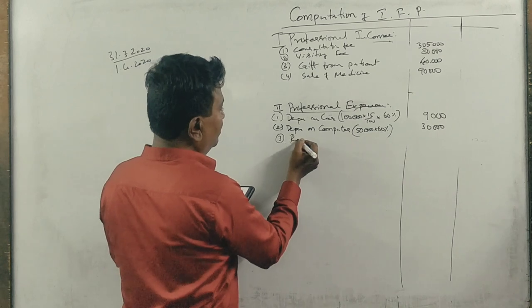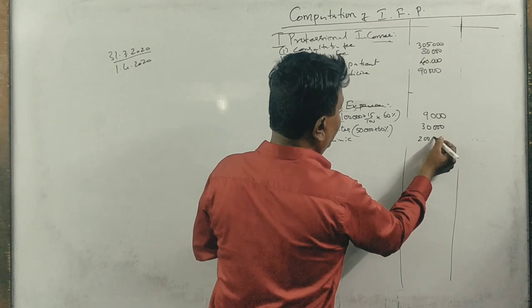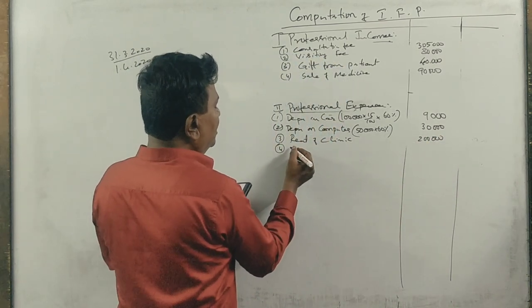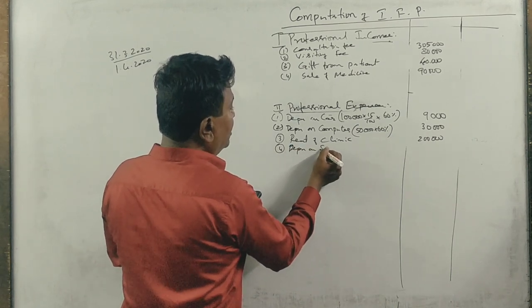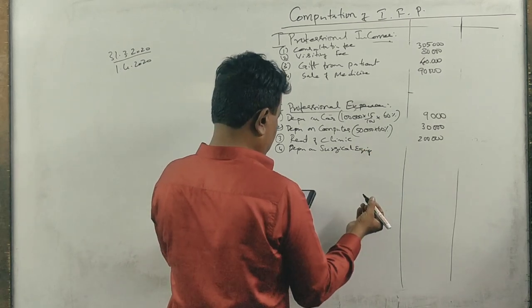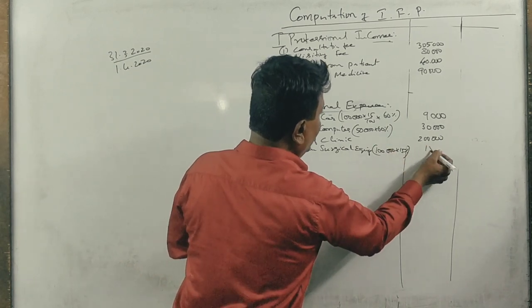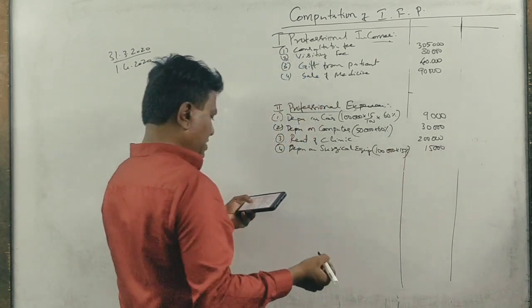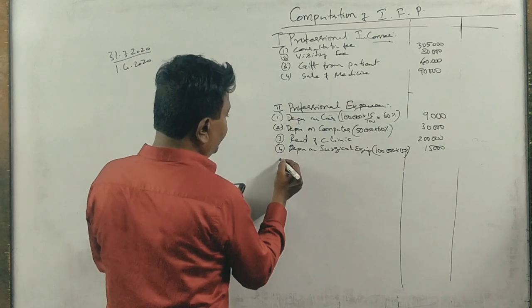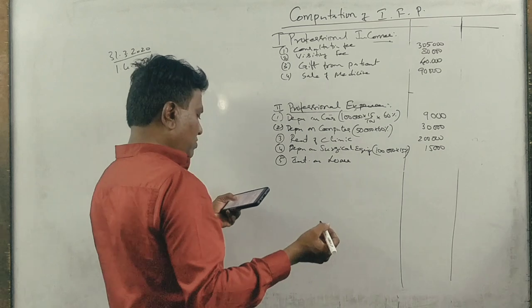2,00,000. Next, depreciation on surgical equipment, what is the amount? 1,00,000. Surgical equipment, plant and machinery, 9,000. Next computer, interest on loan profession, 12,000.